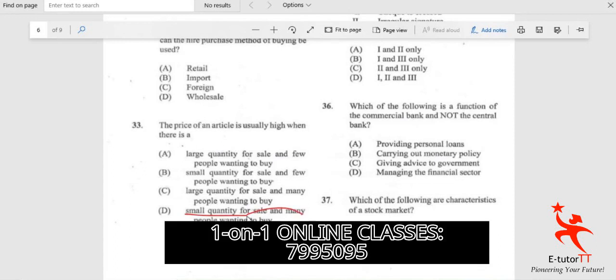When the price of an article or item is usually high, it's because there's a small quantity for sale and many people want to buy it. Any product which will cause high demand and many people will want to purchase it.